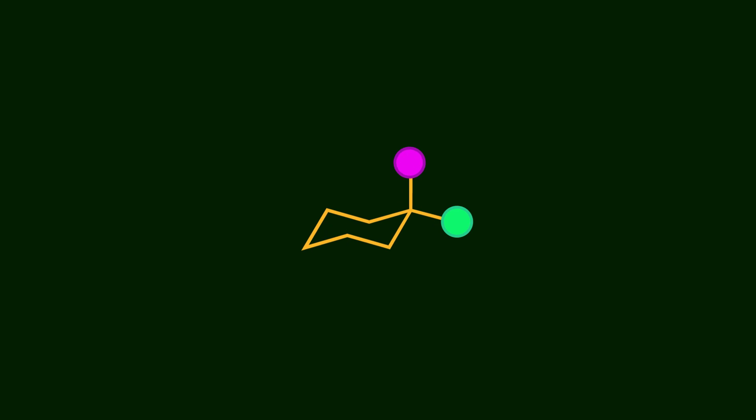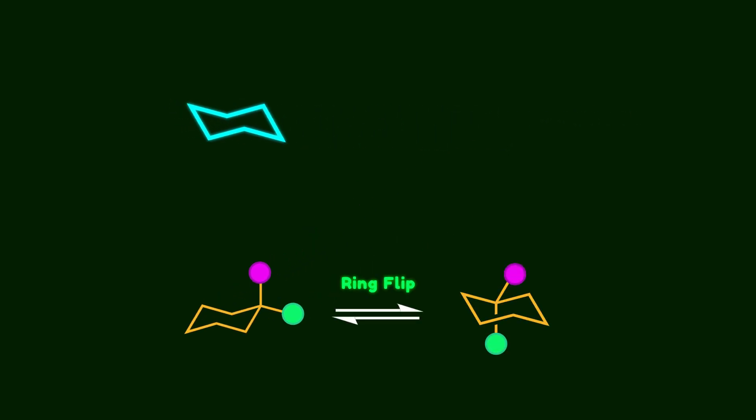Now let's take a look at the chair conformation of cyclohexane. We often forget that this molecule is not static, like we draw it on paper. In reality, it's in constant motion through what's called ring flip or ring inversion, where the axial and equatorial positions keep exchanging places.